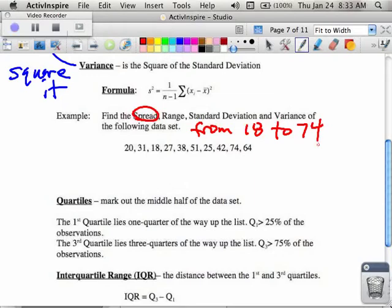I would say the spread is from blah blah. The range, if I'm doing the range, I would take the 74 minus the 18, and whatever value I got, so 56, right? That is my range.